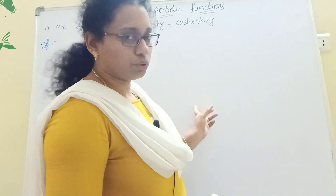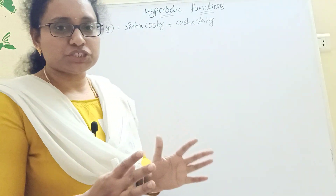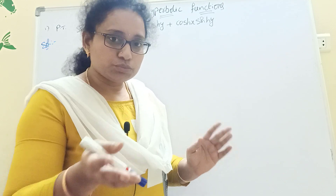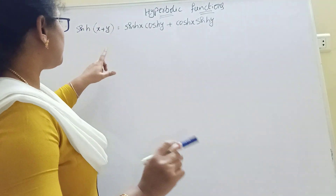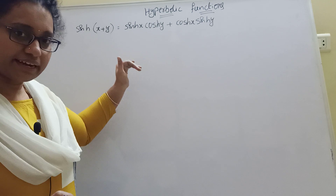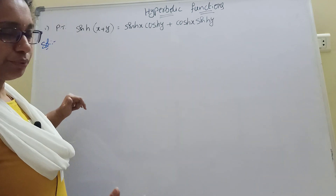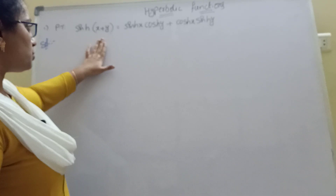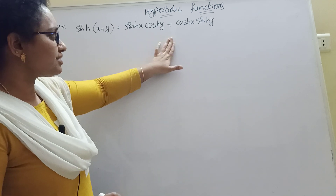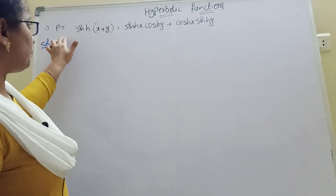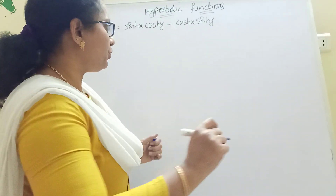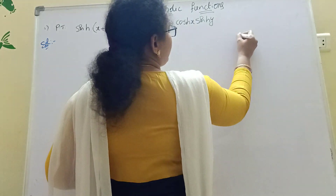It is easy. Hyperbolic functions are similar to general trigonometry, where the formulas are different. For example, sin x in hyperbolic functions will be written as sinh(x). This type of problem is very important for 2 marks. First of all, the formulas are from this.